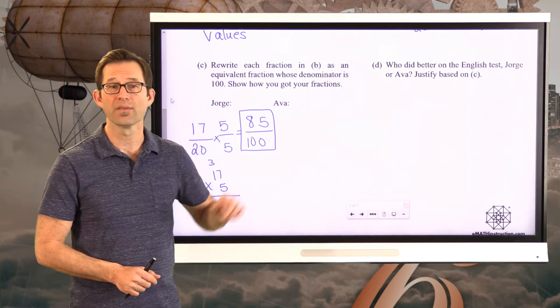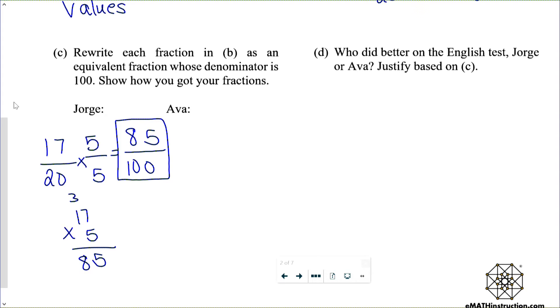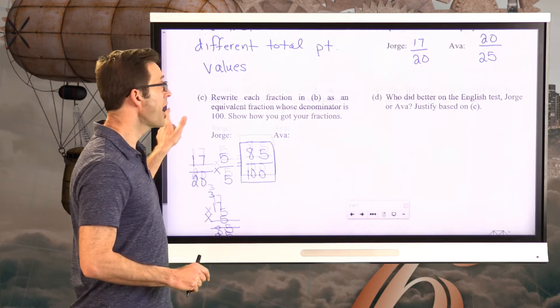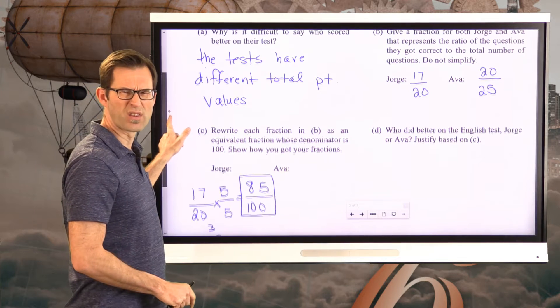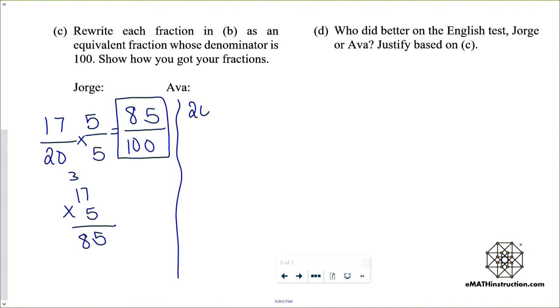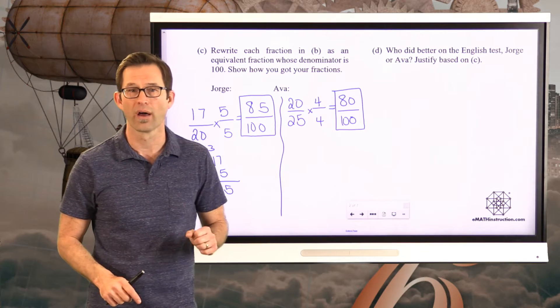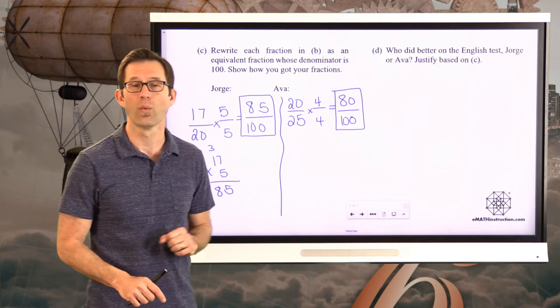What I'd like you to do now is do exactly the same thing for Ava. Well, remember, Ava got 20 out of 25. So let's do the same thing. For Ava, she got 20 out of 25. If I want that to have the same denominator, I would need to multiply numerator and denominator by 4, which will give me 100 there and it'll give me 80 there. So Ava's performance on this quiz was sort of the equivalent of getting an 80 out of a 100 on a test. Jorge is an 85 out of 100 on the test.